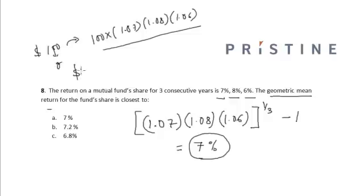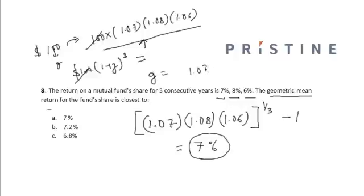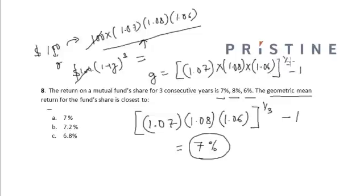$100 × (1 + G)³ will be equal to that value. Canceling 100 from both sides, G equals 1.07 × 1.08 × 1.06, raised to the power of 1/3, minus 1. This is approximately equal to 7%. Looking at the options, option A is the correct answer.